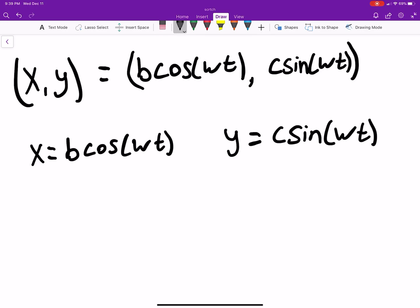We could solve for cosine over here, and we find that cosine of omega t is equal to x divided by b, and sine of omega t is equal to y divided by c.